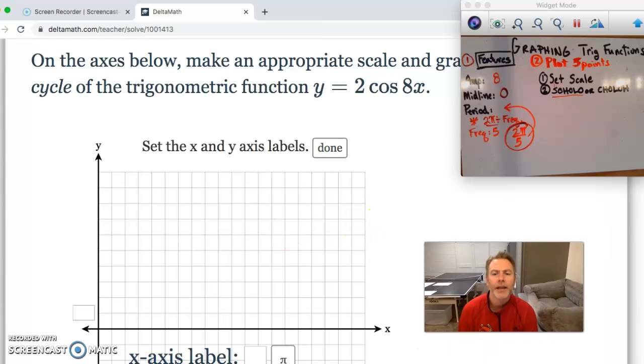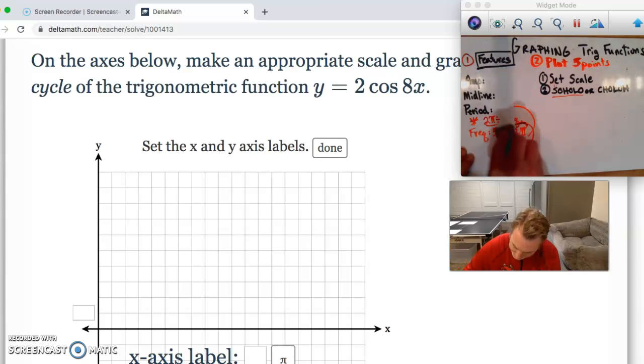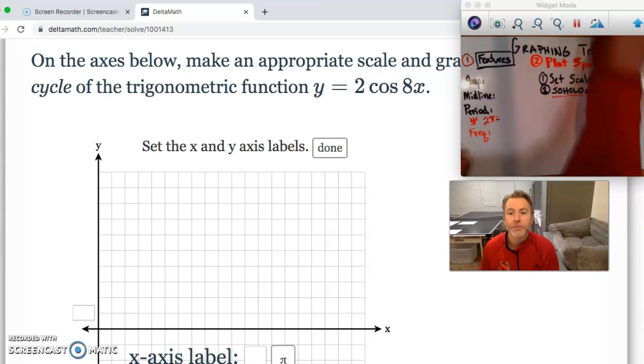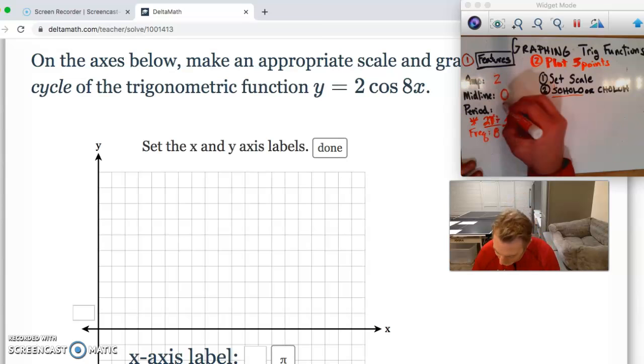So, two cosine eight X. First thing, we're going to be creatures of habit. We're going to go here and we're going to adjust this right here. So, for this particular graph, the amplitude is two because of the two out in front of it. The midline, again, is zero. It's on the Y equals zero or the X axis. I think I said Y axis before. My bad. And then it's period. The period is two pi divided by the frequency. In this case, this frequency is eight. It's the number in front of X. So, if I simplify that, two goes into eight four times. So, this is pi over four. All right. So, these are important features.